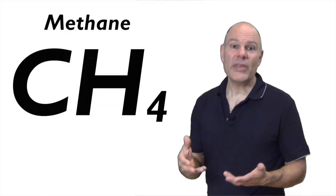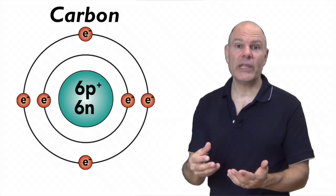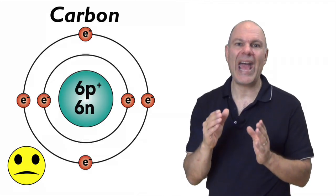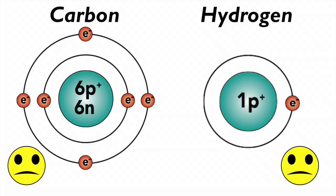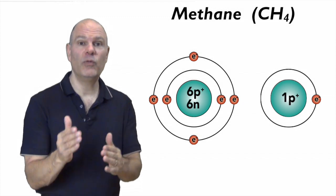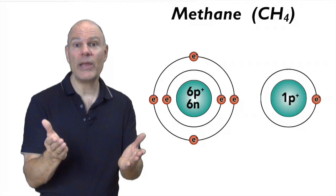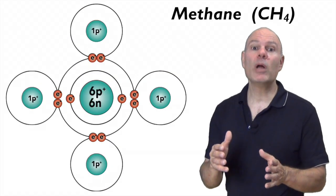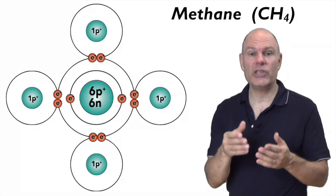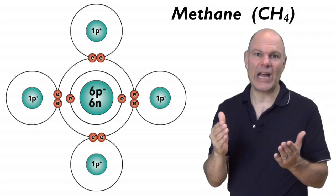Here's methane burning on my kitchen stove. Methane's formula is CH4. Carbon has six protons, six neutrons, and six electrons. Following the octet rule, the first two electrons go in the first orbital, leaving four electrons in the second orbital — making carbon an unhappy atom. Hydrogen is also unhappy with one electron rather than two in its outer orbital. In methane, carbon shares electrons with four hydrogens, giving carbon eight electrons in its outer energy level, and each hydrogen two electrons in its outer orbital. One molecule making five atoms happy.